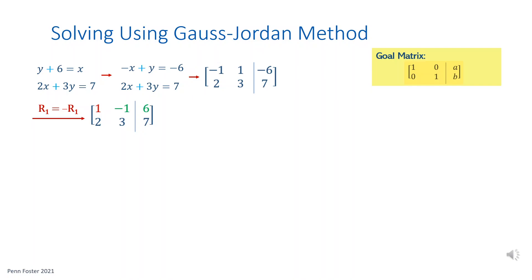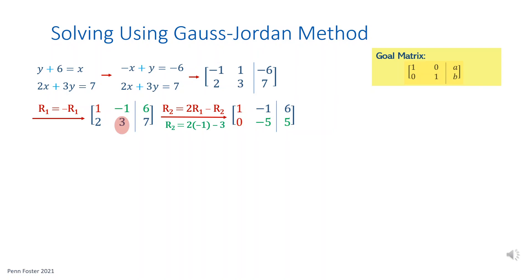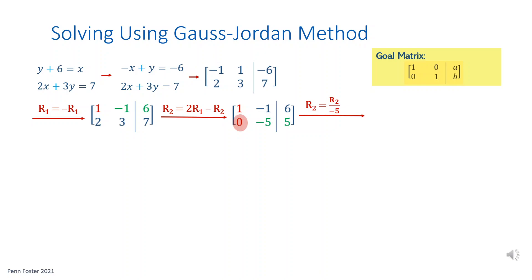Next, change element 2,1 to 0. Multiply the first row times 2, then subtract the product minus the second row. 2 times 1 is 2, then 2 minus 2 is 0. 2 times negative 1 is negative 2; negative 2 minus 3 is negative 5. Finally, 2 times 6 is 12; 12 minus 7 is 5. Next, we need a 1 for element 2,2, so divide the second row by negative 5. 0 over negative 5 is 0, negative 5 over negative 5 is 1, and 5 over negative 5 is negative 1.